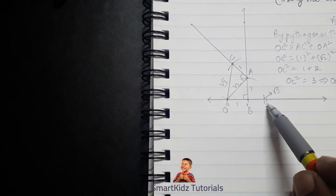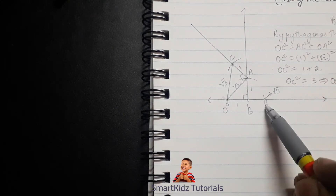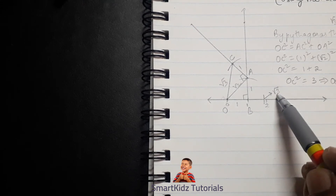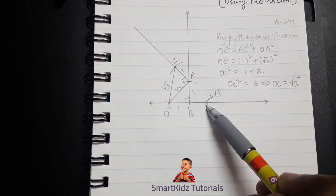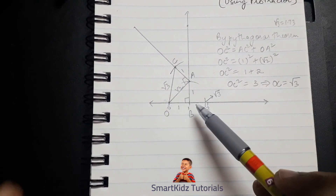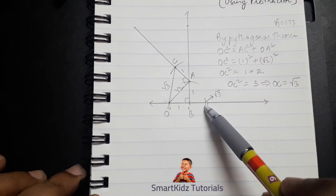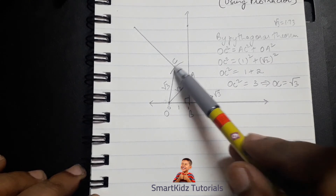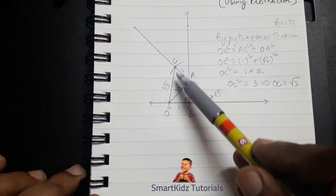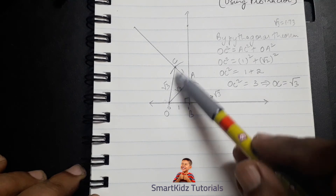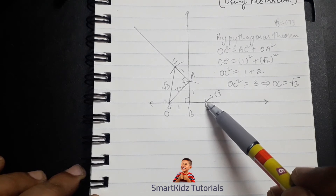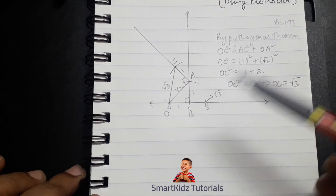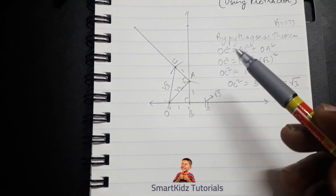Where this arc meets the number line, that is your root 3 — and we mark it there. If you notice, we have root 3 just before 2, which tells us our construction is correct, because the value of root 3 is approximately 1.73. In root 2 we measured one part and cut it on the number line; in root 3 we draw an extra perpendicular, join it to the number line, and use that measurement to cut a new arc.